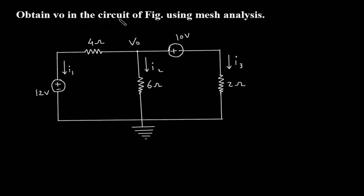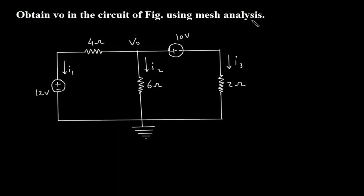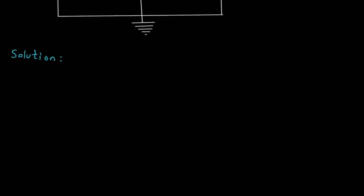Find VO in the circuit of the figure using mesh analysis. We will start with the solution by redrawing the circuit.